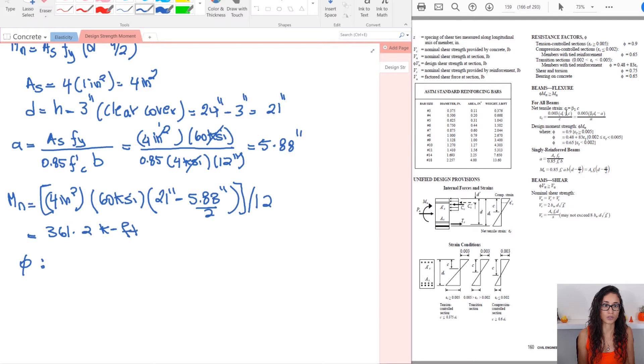So first we need to actually find the tensile strain. So we have 0.003 multiplied by D minus C. We divide that by C. So we don't have C, but we are given A in terms of C. So we can calculate that easily.